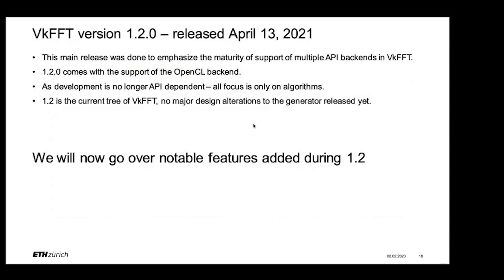The change in supporting multiple APIs was big, so I made a major version increment and then added OpenCL. Adding a new backend now takes three to seven days to learn the backend and implement it. As I had structured all the API-dependent stuff, I could now only focus on algorithms. After that, the development was the same for Vulkan and CUDA — it didn't really matter at that point.